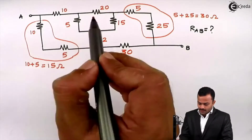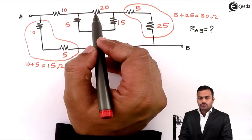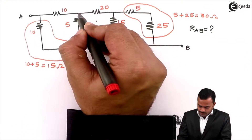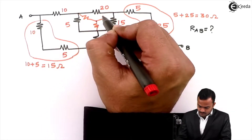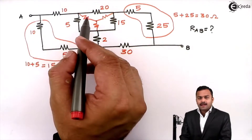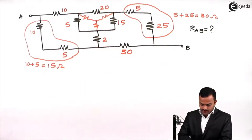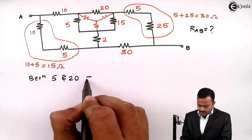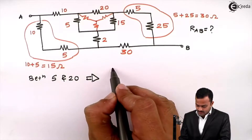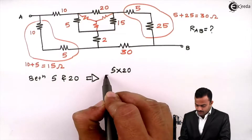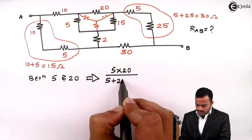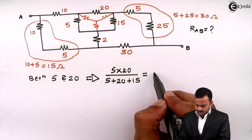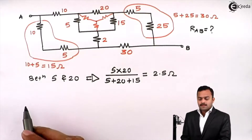If you see properly, I can convert this delta into an equivalent star for further simplification. So the delta will be converted into star like this. Let's write the values for the resistances. Between the 5 and 20 ohm resistors, that will get converted into a star resistance: 5 multiplied by 20, divided by the addition of all three resistances connected in the delta. This will give me the answer 2.5 ohm.